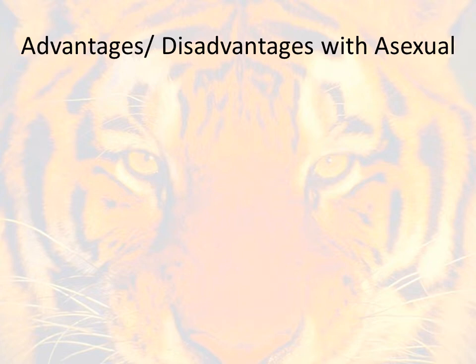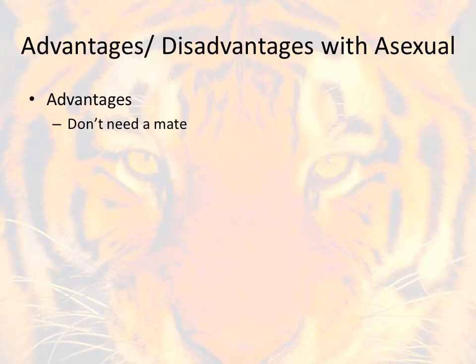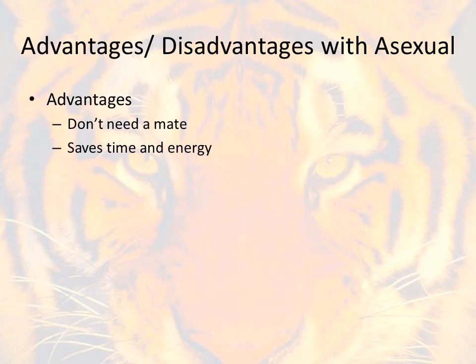Now let's look at some advantages and disadvantages with asexual reproduction. One advantage is quite simply that they don't need to find a mate — they have the ability to just split or reproduce on their own. This saves a lot of time and energy. They don't need to go out and court a mate or waste energy traveling to find another mate. They can just use the energy they have to move forward with the next generation.